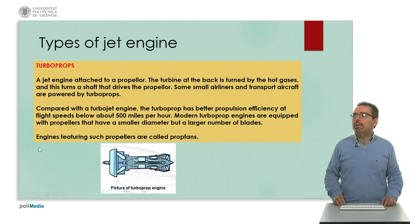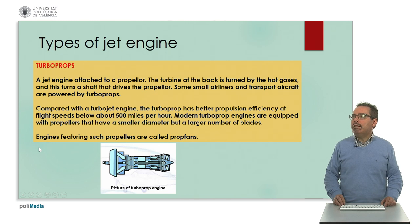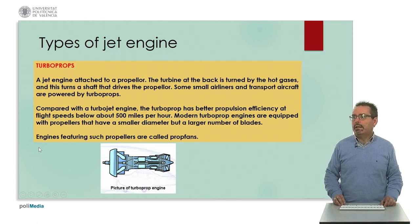The second type is called turboprops. This is a jet engine attached to a propeller. The turbine at the back is turned by the hot gases, and this turns a shaft that drives the propeller. Some small airlines and transport aircraft are powered by this type of engine. Compared with a turbojet engine, the turboprop has better propulsion efficiency at flight speeds below about 500 miles per hour. Recent turboprop engines are equipped with propellers that have a smaller diameter but a larger number of blades, thus increasing the efficiency of the engine. Engines featuring such propellers are also called prop fans.